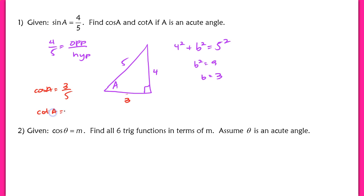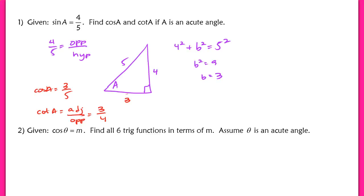So besides using sine squared plus cosine squared equals 1, we now have a new method: using right triangles and Pythagorean theorem to solve for missing trig function values. I actually like this method better because you're getting a better visual and a better tie into our right triangle trig definitions. It's definitely my recommendation to use this method — I think it will be easier and more practical.